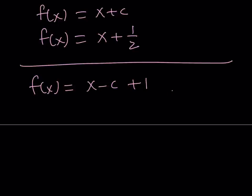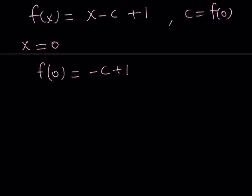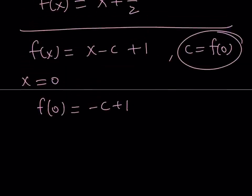Now, remember, c is equal to f of 0, right? That's how we named it. So why don't we just replace x with 0 on both sides of this equation, because we have an expression for f of x. So let's go ahead and replace x with 0. That's going to give us f of 0 equals negative c plus 1. But f of 0 is equal to c from here. Therefore, I can replace f of 0 with c.